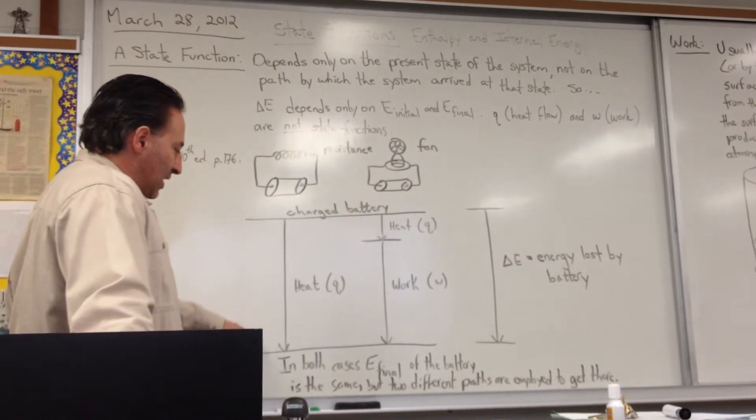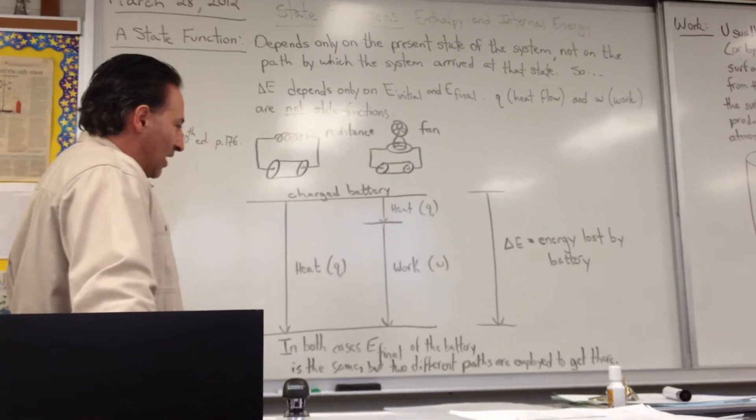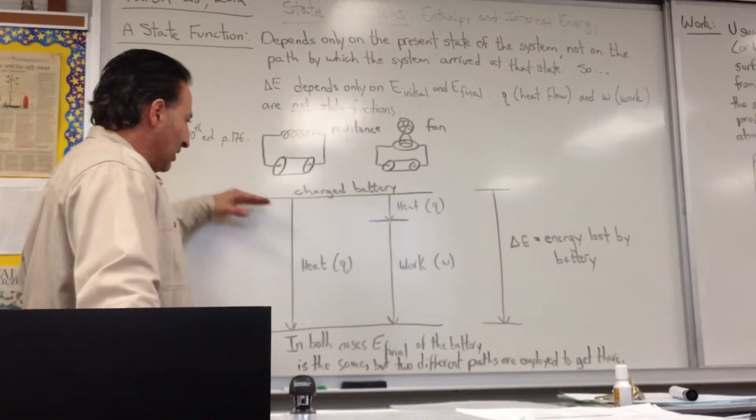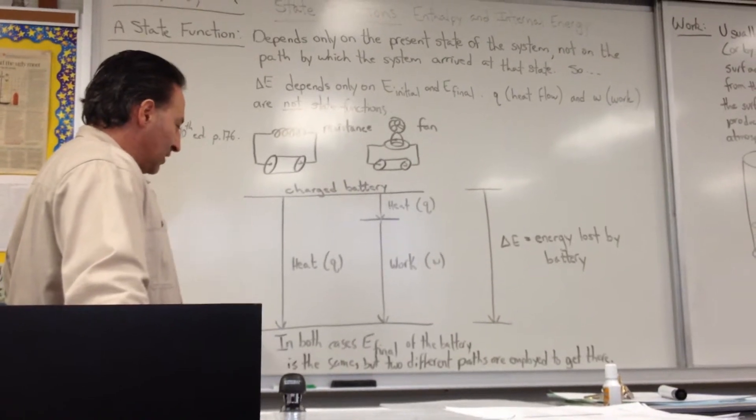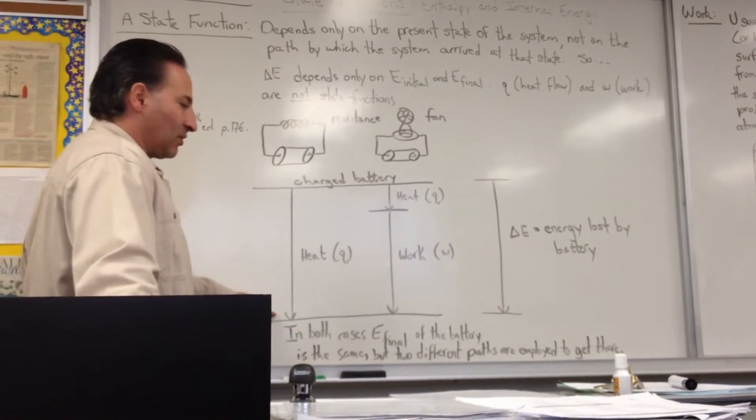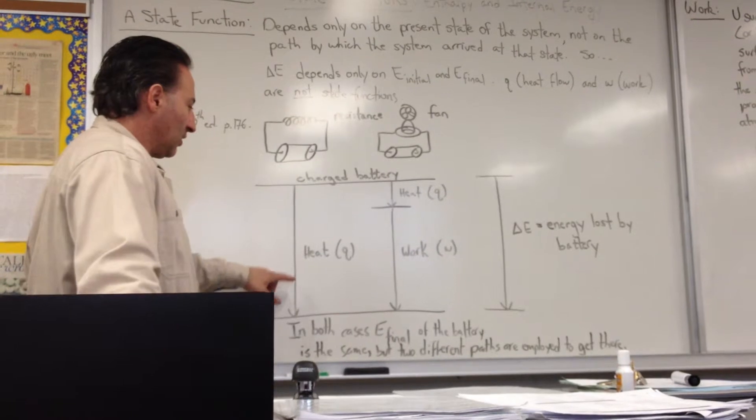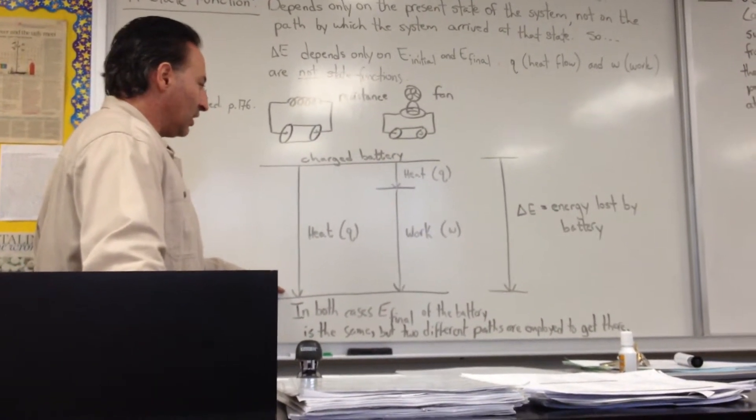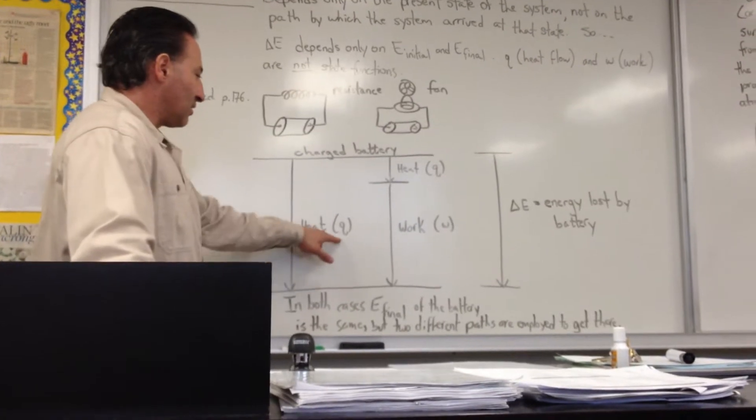And the way you would represent that in an internal energy diagram is, in the case of the coil, it's just generating heat. At the beginning, you have a charged battery. At the end, you have a dead battery. And X amount of heat has been produced. All the energy in the battery, all the electrochemical internal energy of the battery, was released in the form of heat.